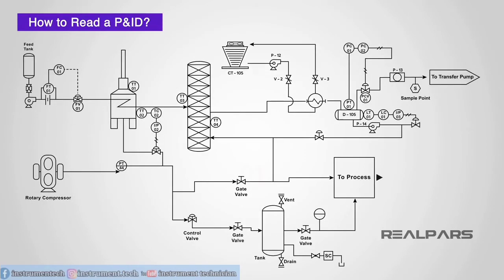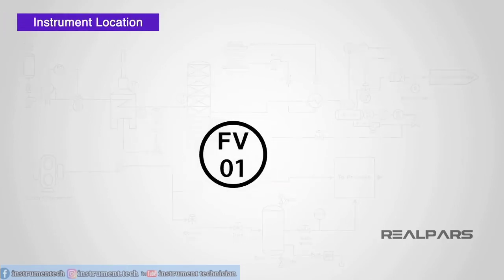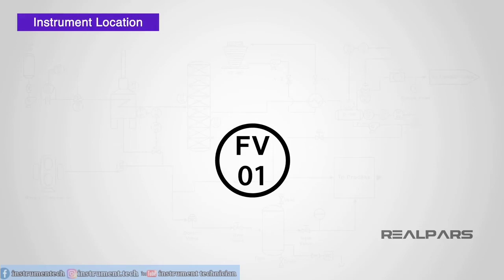Symbols, circles, and lines are used to represent instruments and to show how they are connected to the rest of the system. Now that we know our device, FV01, is represented by a circle, we can also tell from the PNID where the instrument or device is located.